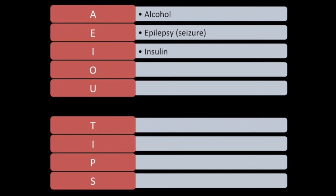I is for insulin — diabetics. Have they taken too much insulin and are now hypoglycemic? Have they not taken enough and are now hyperglycemic? Both can cause altered mental status. O is for overdose — lots of different overdoses can cause altered mental status. U is for uremia and underdose. Uremia is when an end-stage renal patient on hemodialysis hasn't gotten dialysis in a few days — different toxins build up in their blood and cause them not to act right.